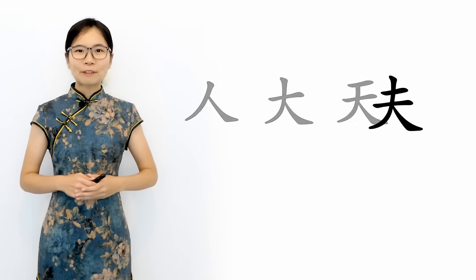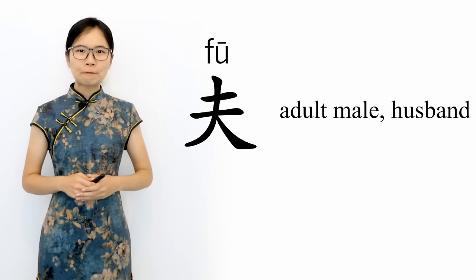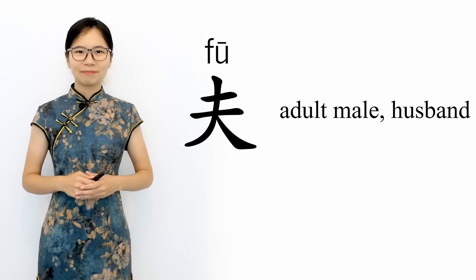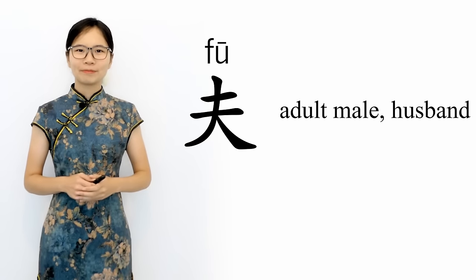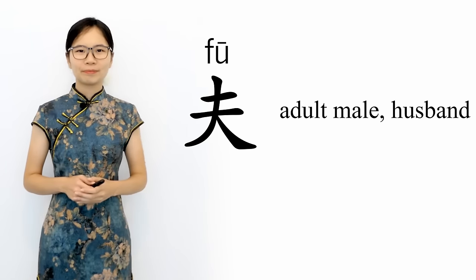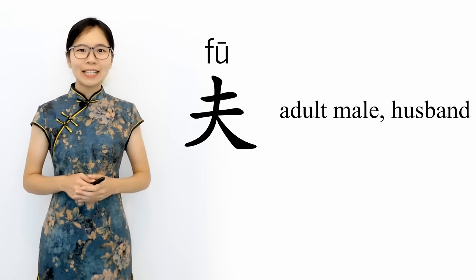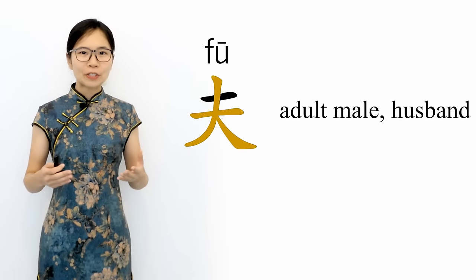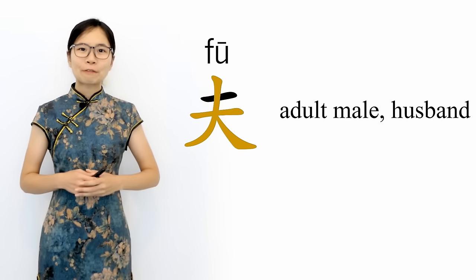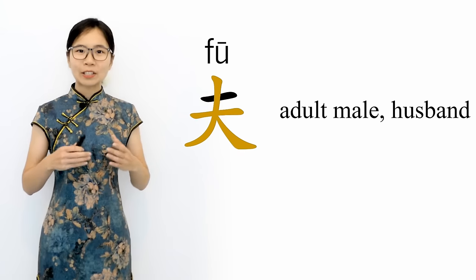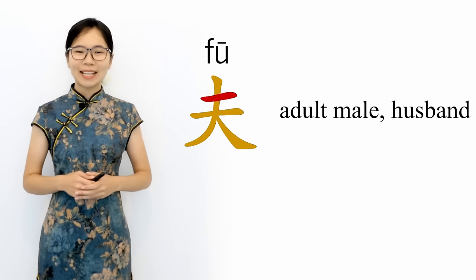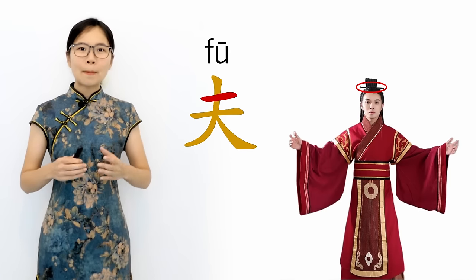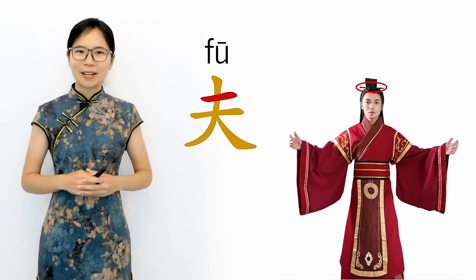Our final character for this lesson is 夫, which means adult male or husband. This character is made from a slightly taller version of the character for big with a horizontal line added to it. This line represents the hairpin men used to wear when they became adults.